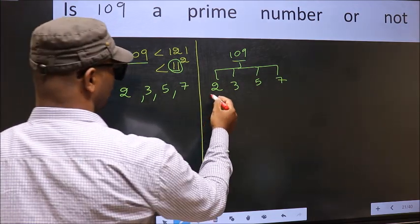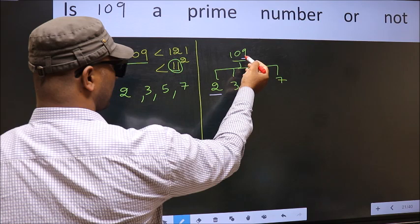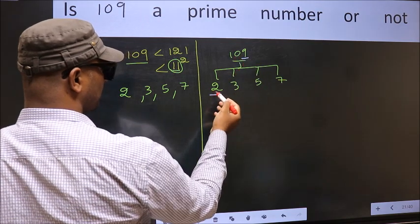Starting with 2. Last digit is 9, not a 1. So this is not divisible by 2.